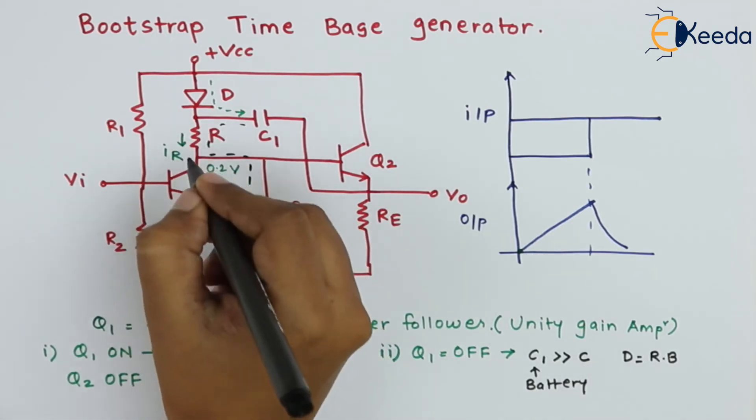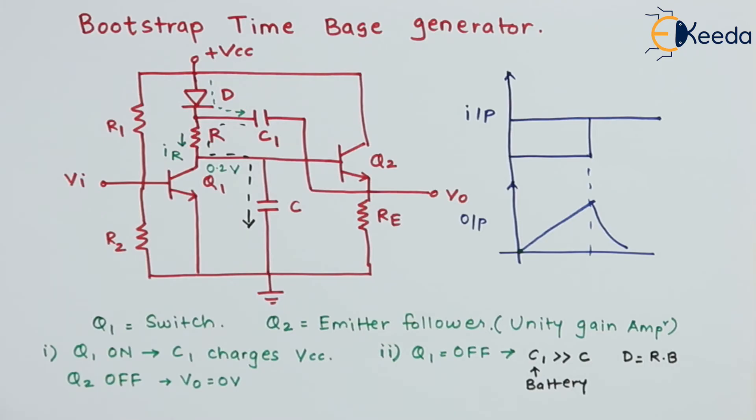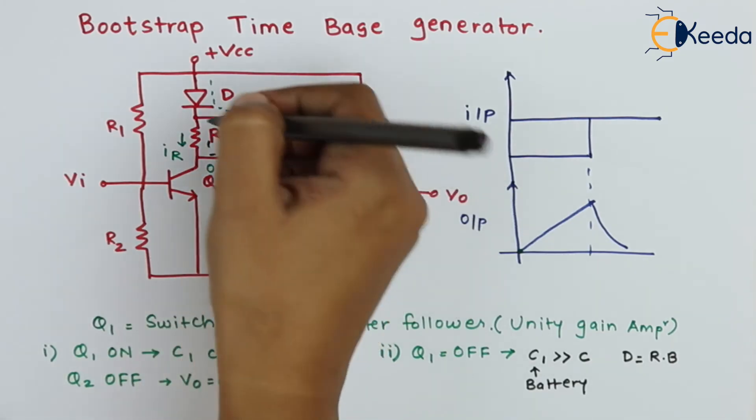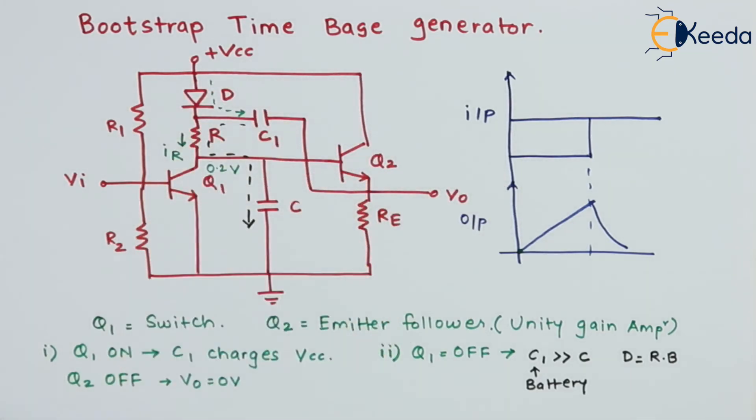The voltage drop across R is also constant. The current flowing through resistor R is constant and this will act as a constant current source. So the current flowing through R1 acts as a constant current source.